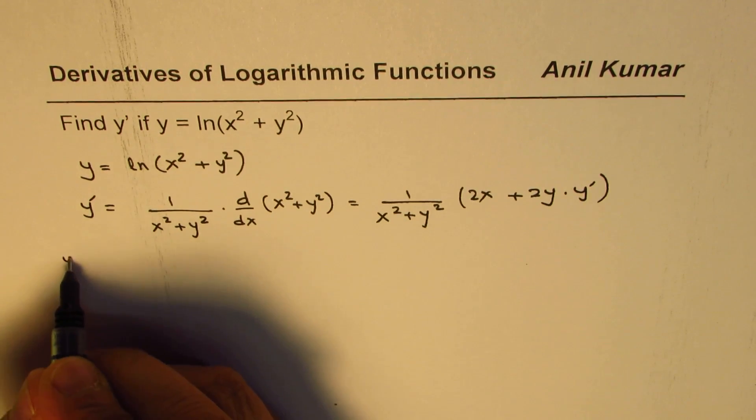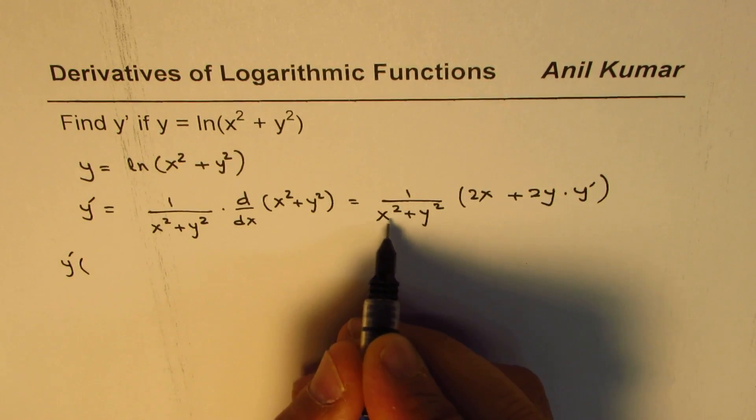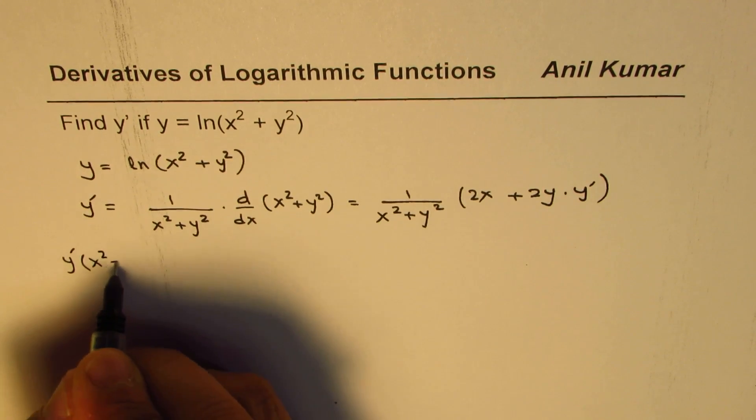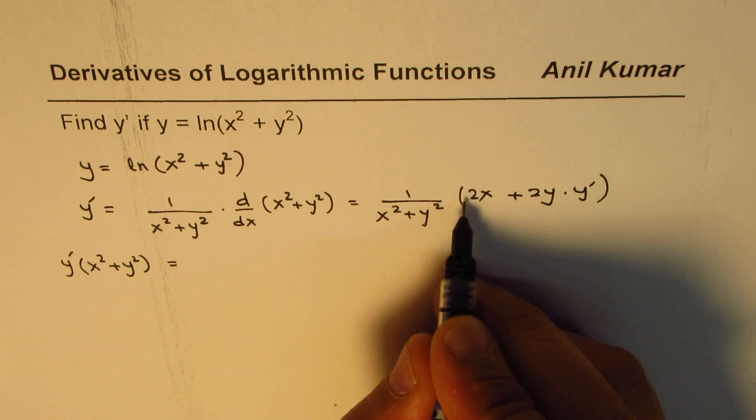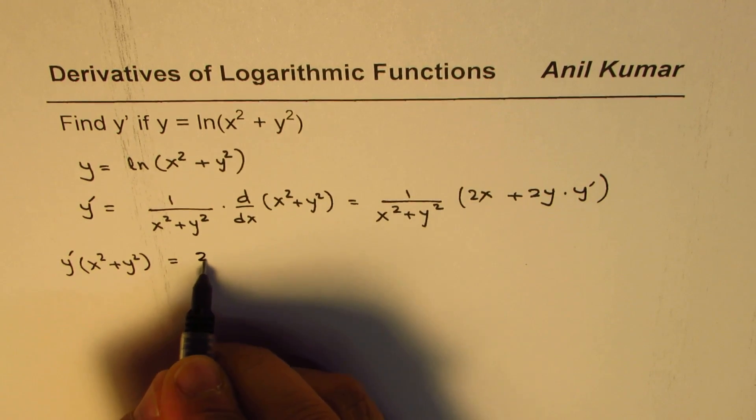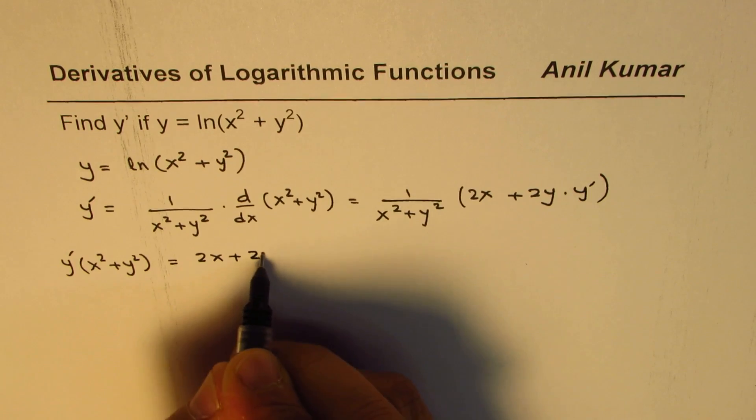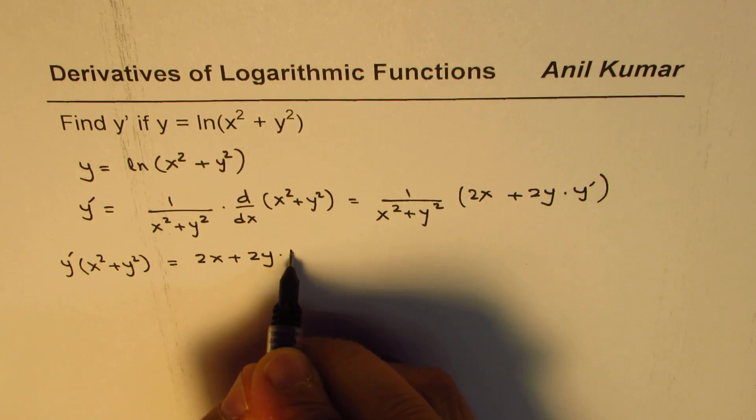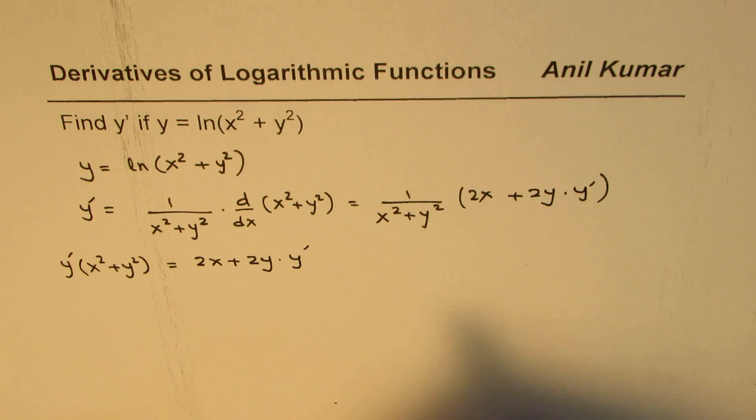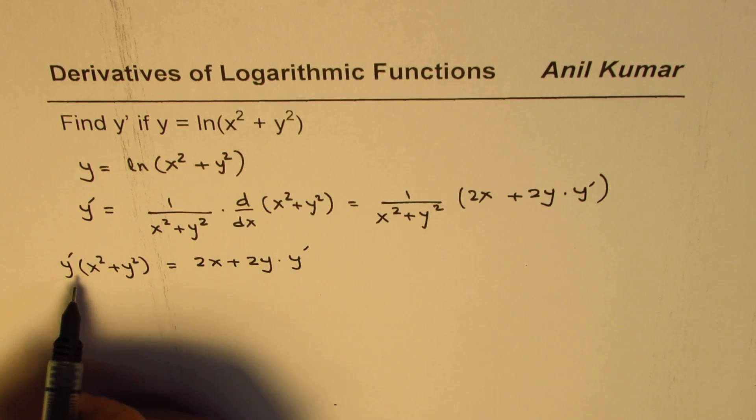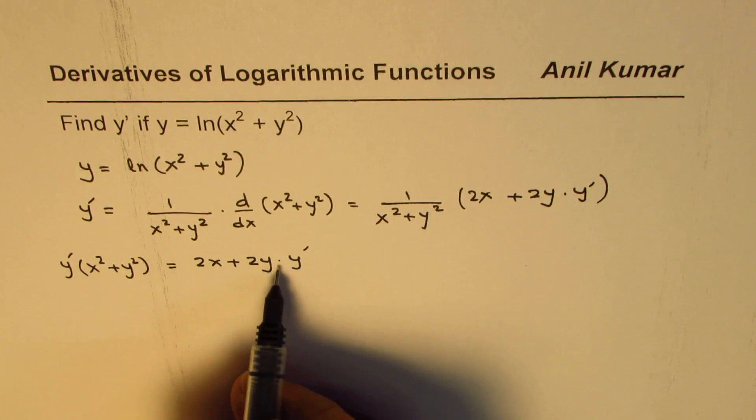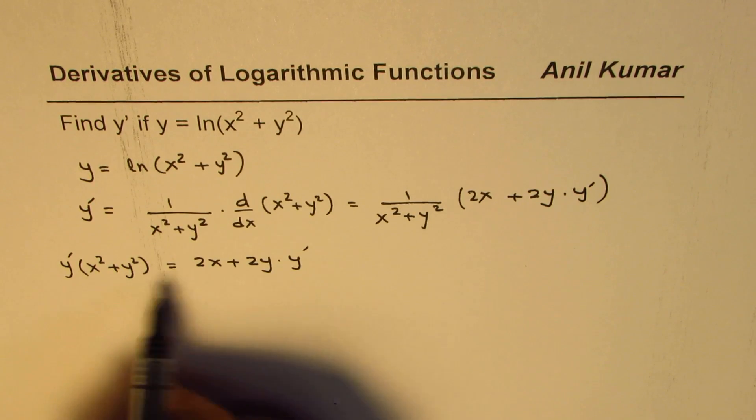So let's cross multiply. So we have y prime times x squared plus y squared equals to all this, which is 2x plus 2y times y prime. Now, to isolate, we can take this term to the right side.